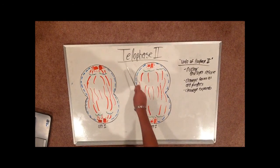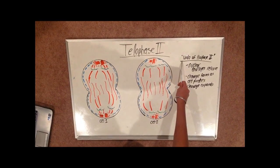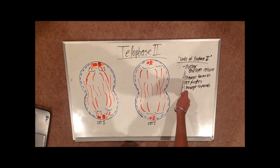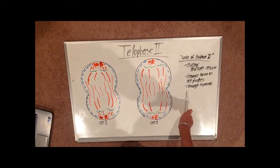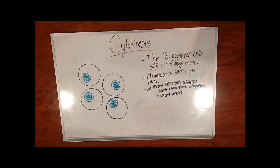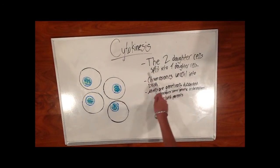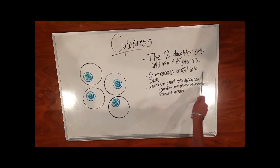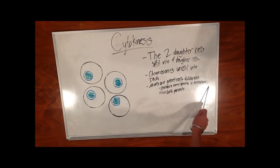Next is telophase 2. Telophase 2 is an undoing of prophase 2. In this phase, the nuclear envelope reforms around the chromosomes as the cell pinches at the cleavage. The cells split in cytokinesis forming four genetically different daughter cells in total. The chromosomes uncoil in the DNA. All cells are genetically different and contain some genetic information from both parents.